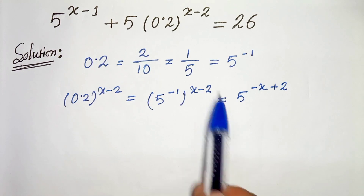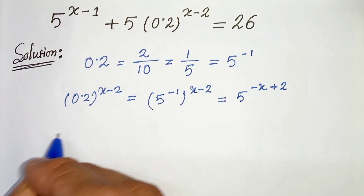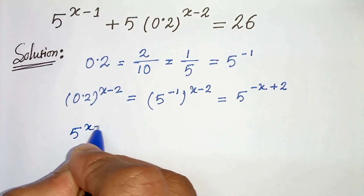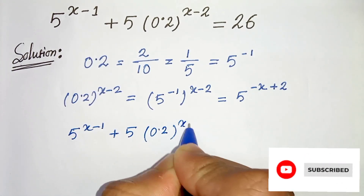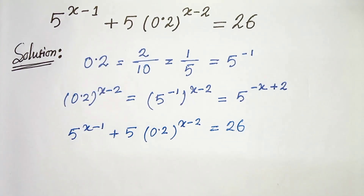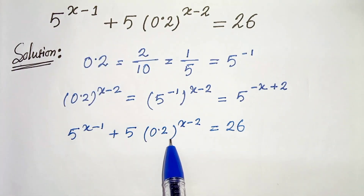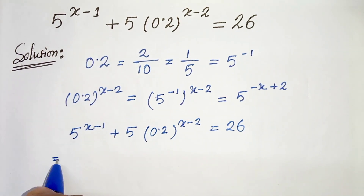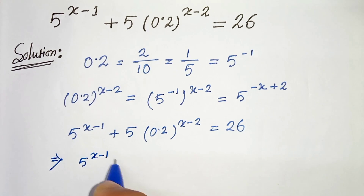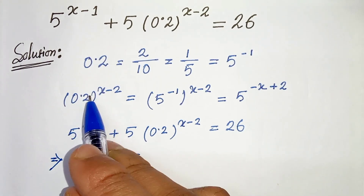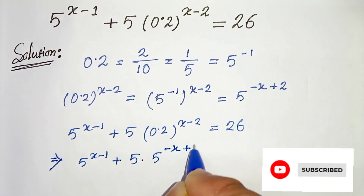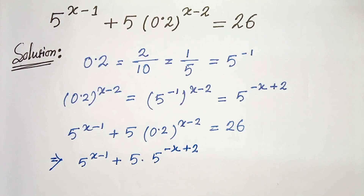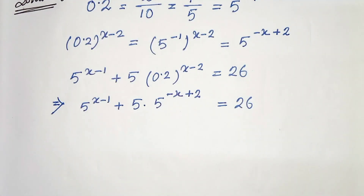Now let's put this into the equation. We are given 5 to the power x minus 1, plus 5 times 0.2 to the power x minus 2, equals to 26. Now let's replace the value of 0.2 to the power x minus 2. So 5 to the power x minus 1, plus 5 times 5 to the power minus x plus 2, equals to 26.